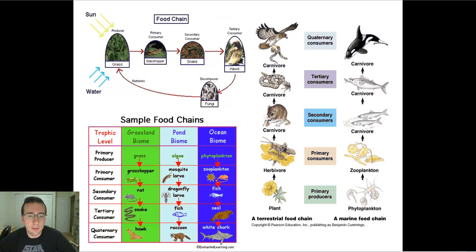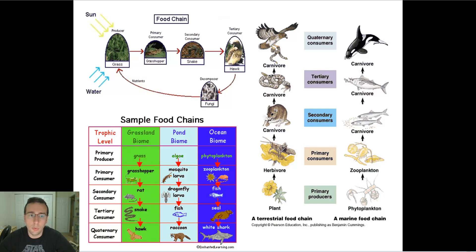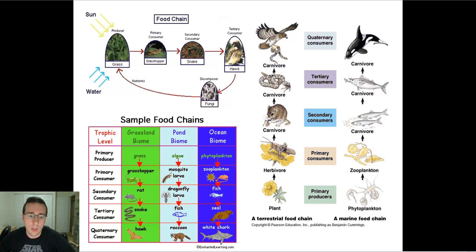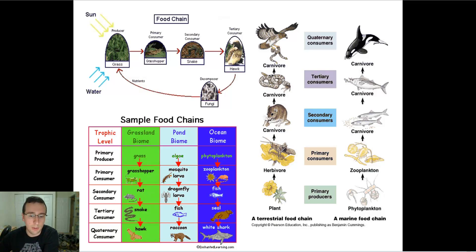Food chains basically show you who eats who. The arrows in the food chain usually point from whoever gets eaten towards whoever did the eating — basically going in the direction that the energy and matter is flowing. The energy goes from the plant to the primary consumer and so forth.